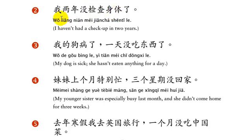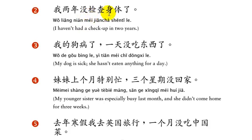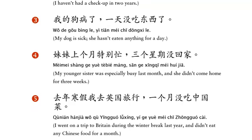我两年没检查身体了. I haven't had a checkup in two years. So: 我, then the time expression 两年, then 没, then the action 检查身体 — check my body — then 了.